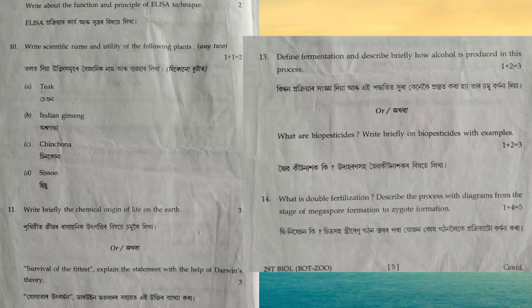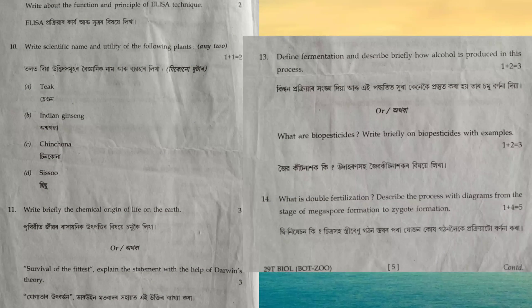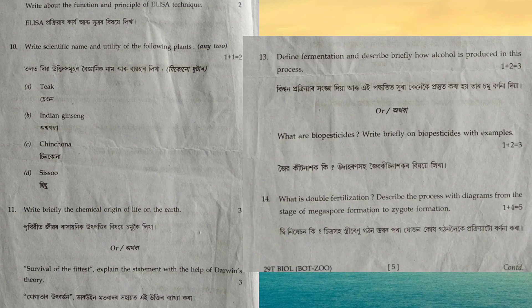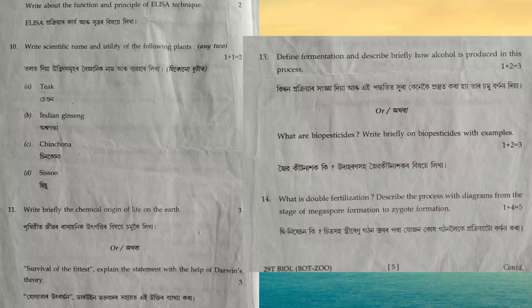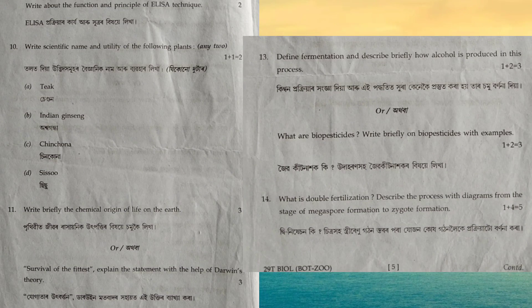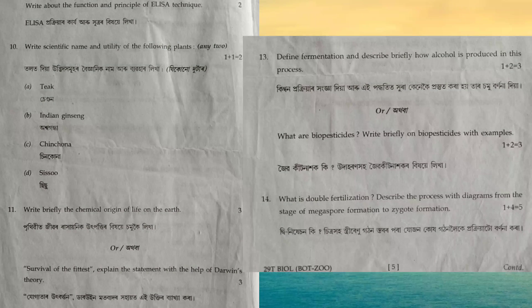Next question: what are biopesticides? Biopesticides are substances made from biological organisms or of biological origin. Examples include neem-based products and baculoviruses. Their benefits include that they do not pollute the soil or the environment.